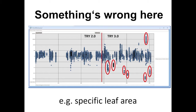Here you see the in-between TRY version 2 and TRY version 3, where there were new data in version 3 that were not yet error-corrected for specific leaf area. You can see the individual datasets that contributed SLA — some are error corrected and some are not. These outliers are simply misunderstandings of units, which are easy to correct and include in the database.